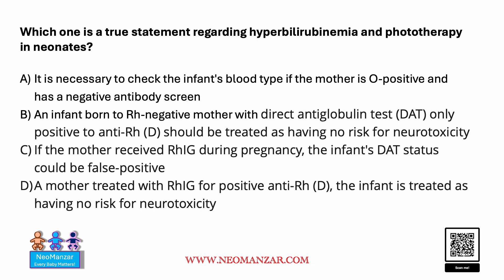Option C: if the mother received RH Ig during pregnancy, the infant's DAT status could be false positive. No — it will be positive because the RH Ig can cross the placenta and give a positive result.